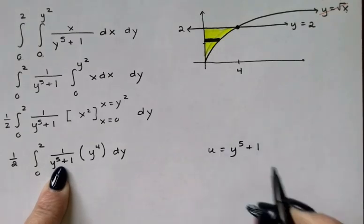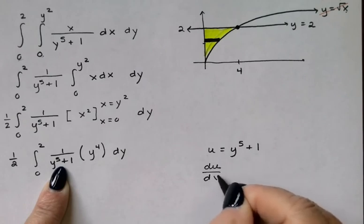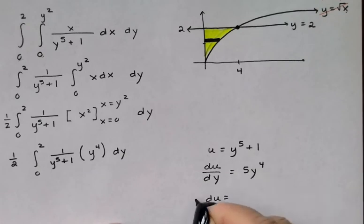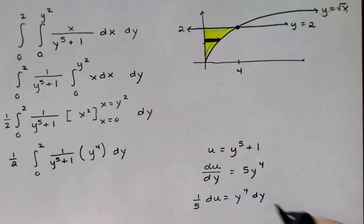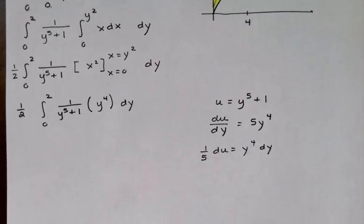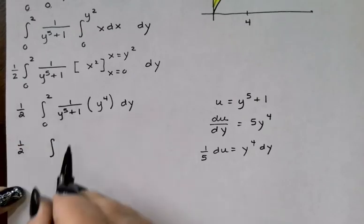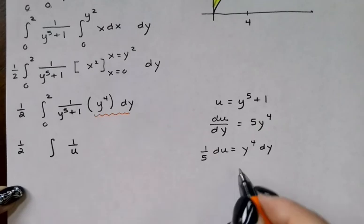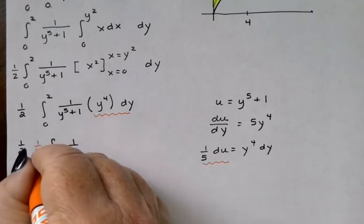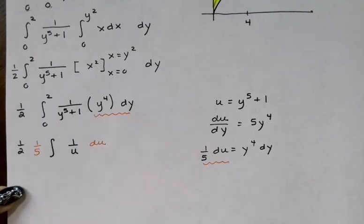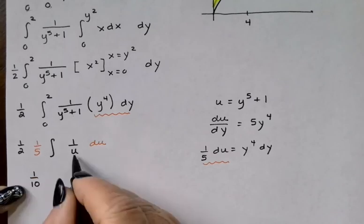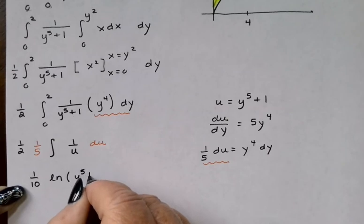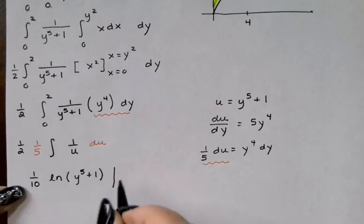U is that denominator, u equals y to the fifth plus 1. du/dy would be 5y to the fourth. So let's see. du, I'm going to put the 1 fifth over here. And I'll put the y to the fourth dy on the right. And so going back to my problem, I would have a 1 over u. And this y to the fourth dy can be replaced by the 1 fifth du. So I end up with a 1 tenth integral of 1 over u du is the natural log of u, and I'm going to go ahead and say u is actually y to the fifth plus 1. And my original limits of integration were from 0 to 2.